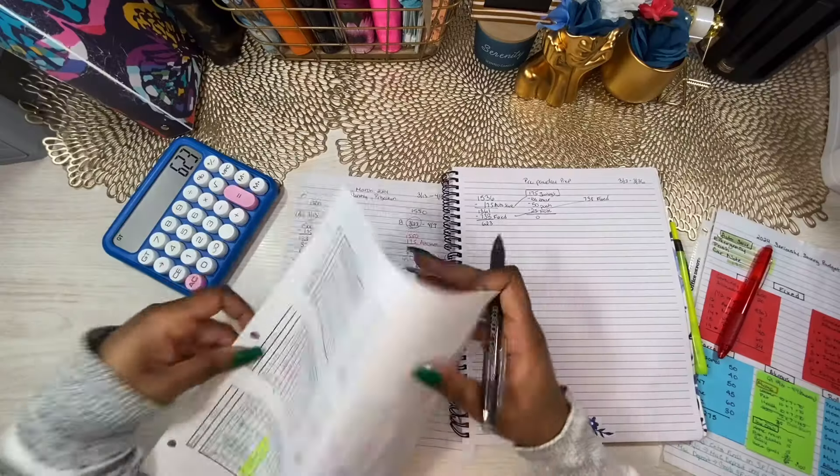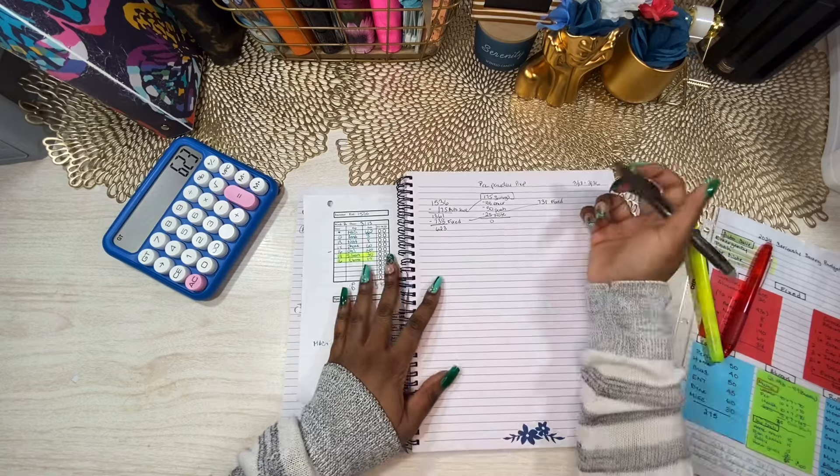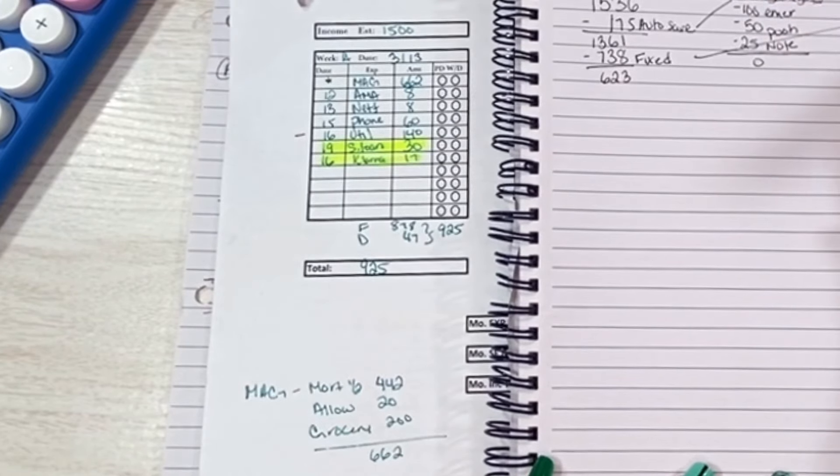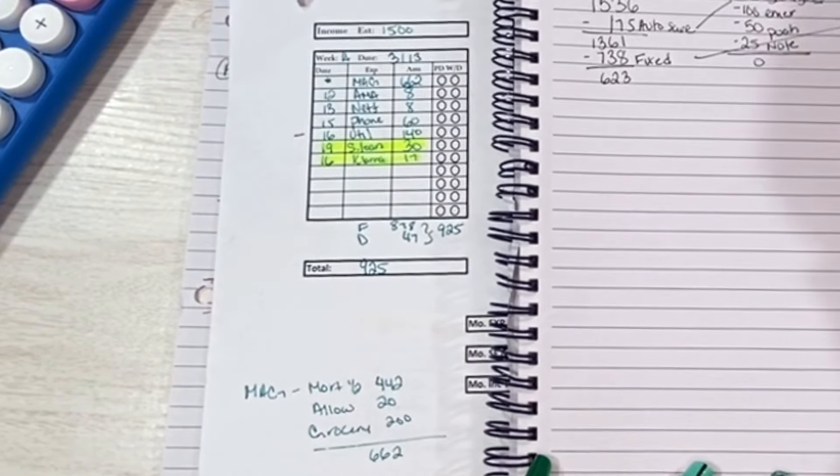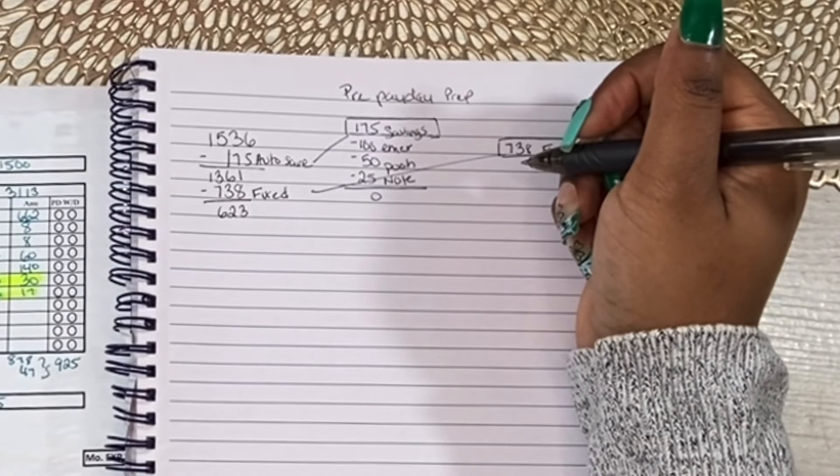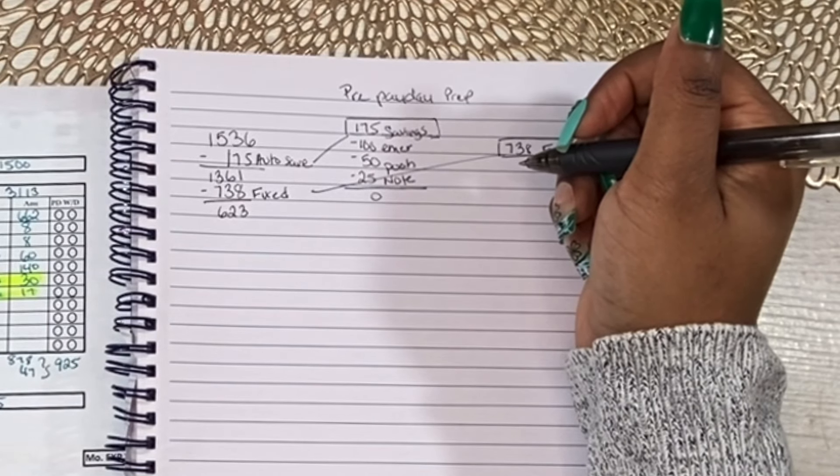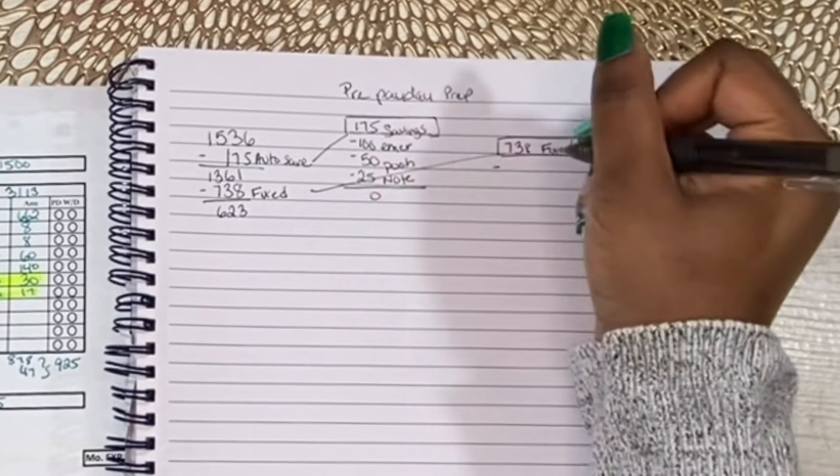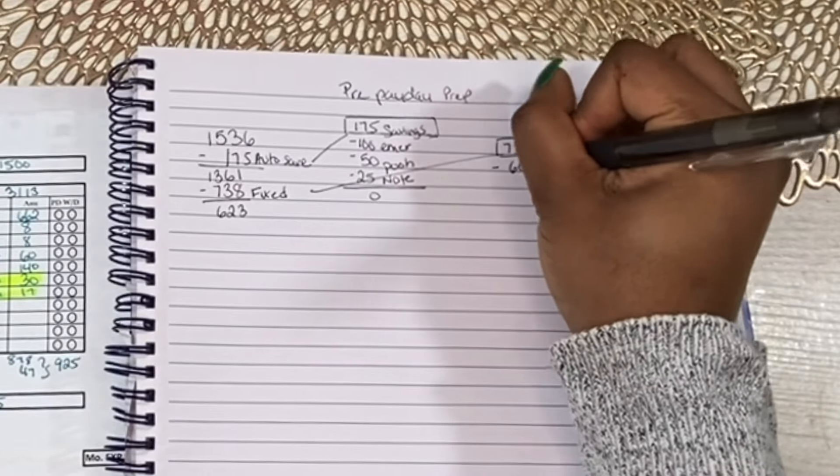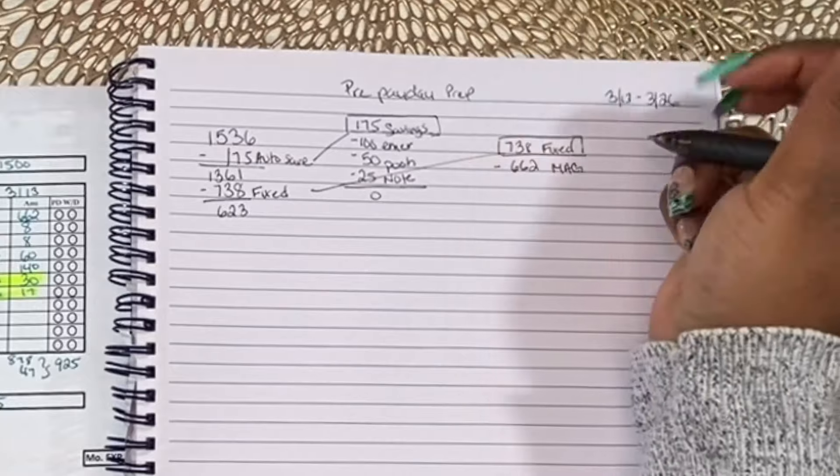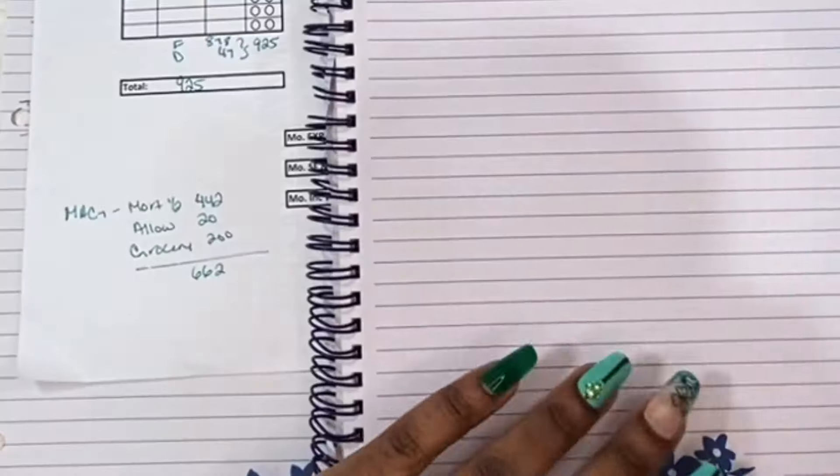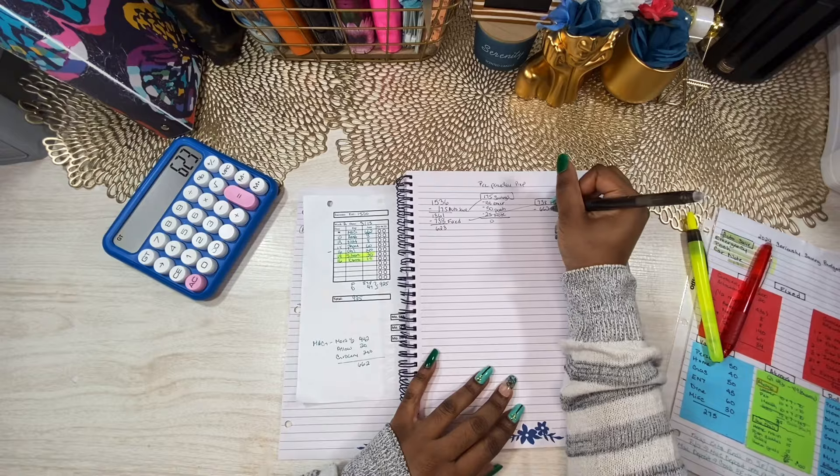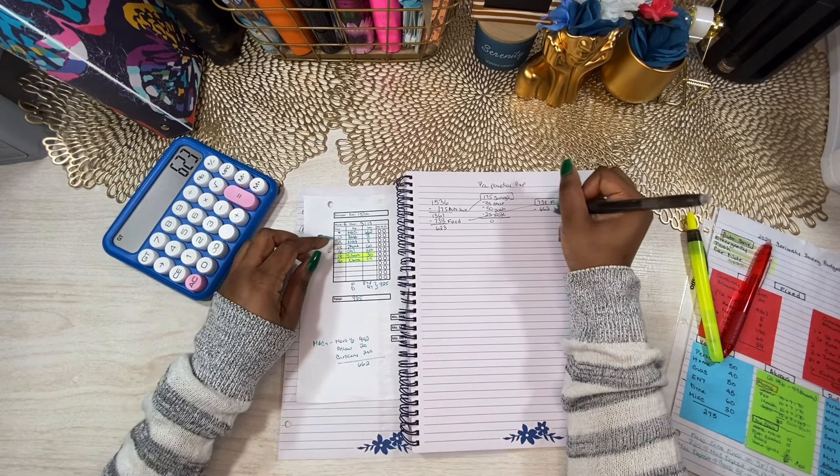All right, so let's map that out. So $738 fixed. So those bills include our MAG, which is our Mortgage Allowance and Grocery. So mortgage did go up this year. Not by much, but it did go up. Thankfully, I was able to do that escrow shortage because if I wasn't able to pay that, it would have gone up by a lot more. So the first thing we're going to take out is the MAG, which is $662 at the bulk. And I put these all three into one because these come out every pay period as well.